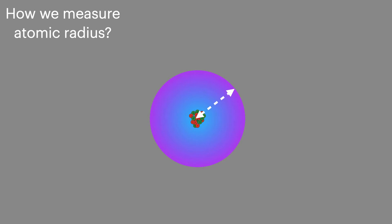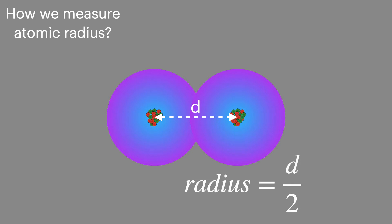The problem comes when we have to determine exactly where that electron is. And to do that, we'll use another atom as a reference point. And when they're bonded together, we can then measure the distance between the two bonded atoms and divide that by two to give us the radius.